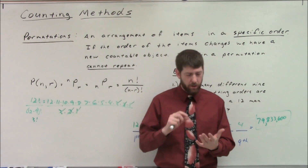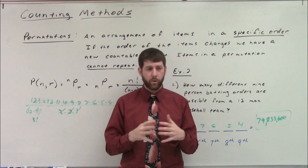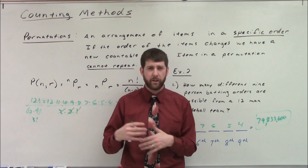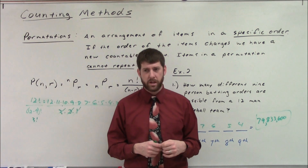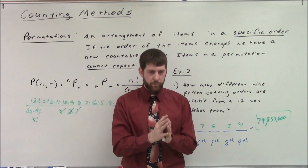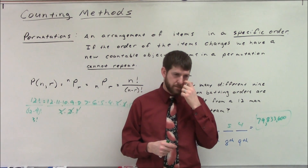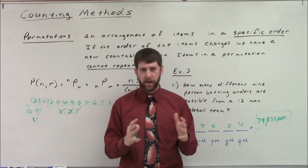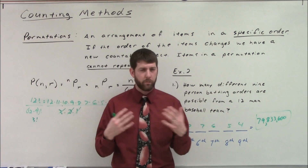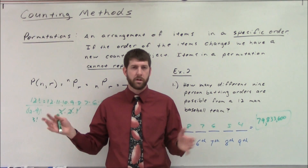Remember, permutations require a specific order. If we're talking about first, second, third place in a race, batting orders, or positions with titles within a group — and the items cannot repeat — we're talking about a permutation. If items can repeat, it's just a counting principle: count choices for each slot and multiply.